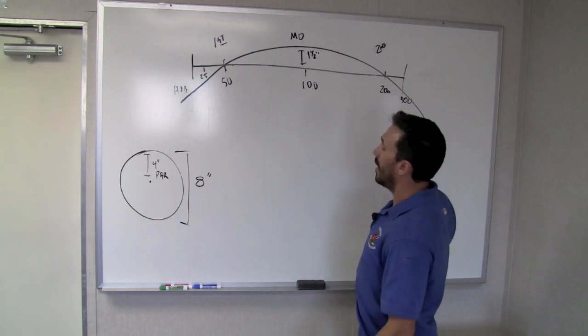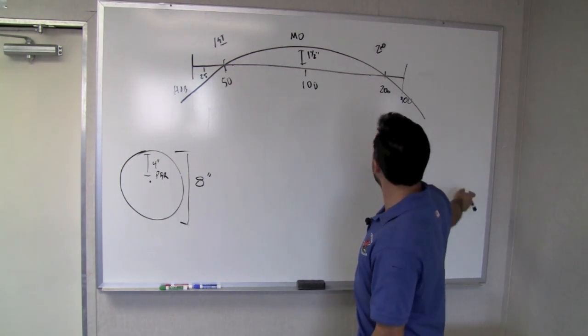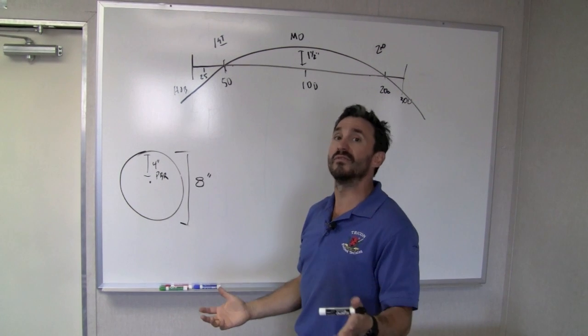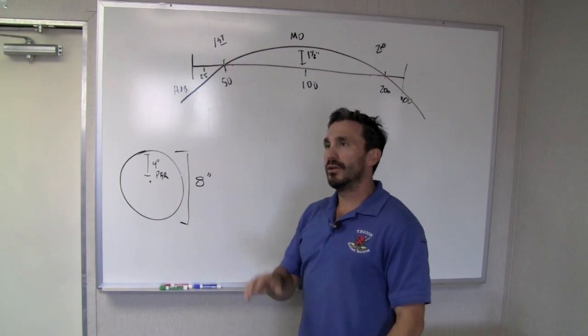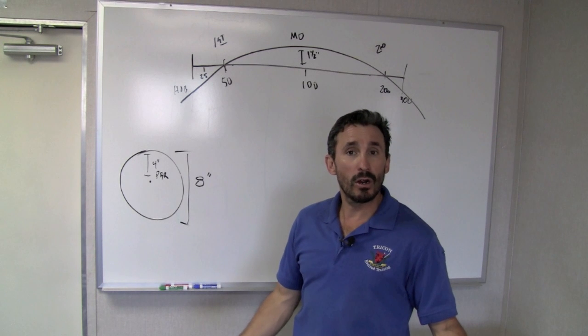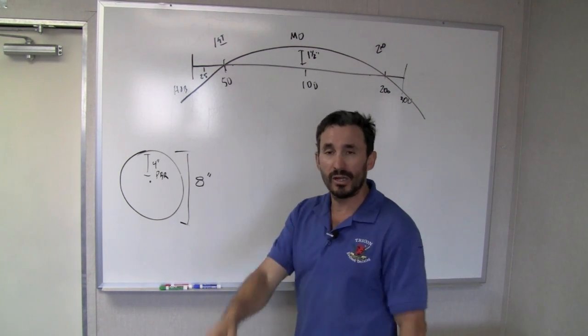Then it's going to start to climb back down second intersection at or about the 200 yard line. And then it'll continue to fall until it reaches the ground. Again, at about 300 yards, it's dropping significantly. You might find that your point blank range is going to end 225, 250 yards.